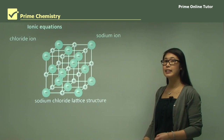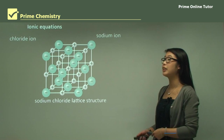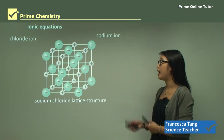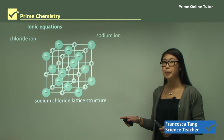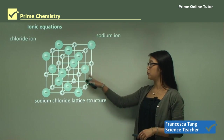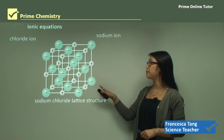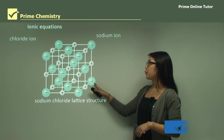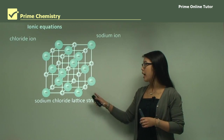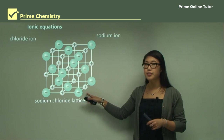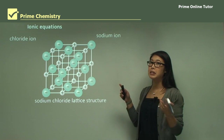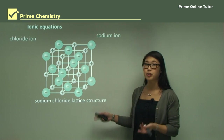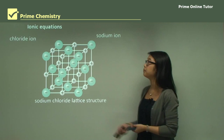Hey everyone, this lesson we're focusing on ionic equations. Ions are formed from anions — negative ions and positive ions — which, if there's no water involved, will end up forming a lattice structure like this one here.